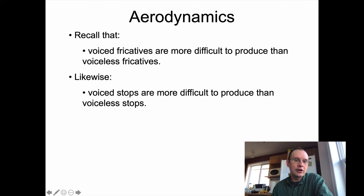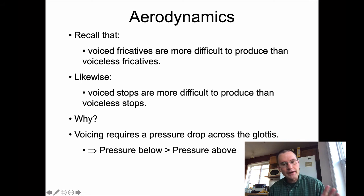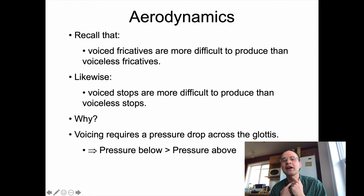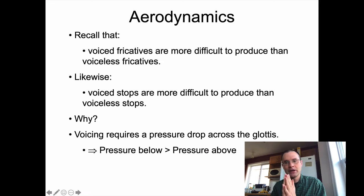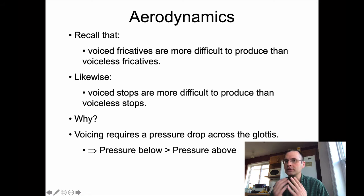We talked about this a little bit with stops — a different kind of obstruent. Voiced stops are more difficult to produce than voiceless stops, but for a slightly different aerodynamic reason. Voicing requires a pressure drop across the glottis: air pressure below the glottis needs to be higher than above. If that condition is met, air flows from high pressure to low pressure through the glottis, and if you're holding the glottis at the right tension, it'll pop open due to the pressure difference, then the Bernoulli effect will cause it to close again — giving you the cyclic pattern that is voicing.